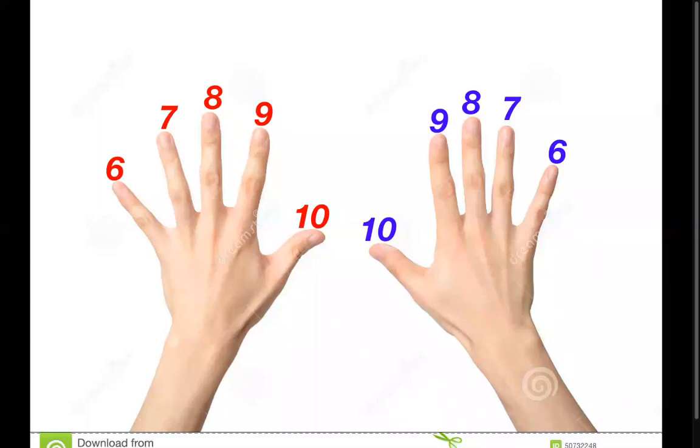So what you do is, let's say you want to multiply 6 times 7. As you notice, I'm numbering all my fingers from 6 to 10 this way and from 6 to 10 this way. So 6 times 7, what you do on this hand, you close the 6, and this hand you close up to 7.